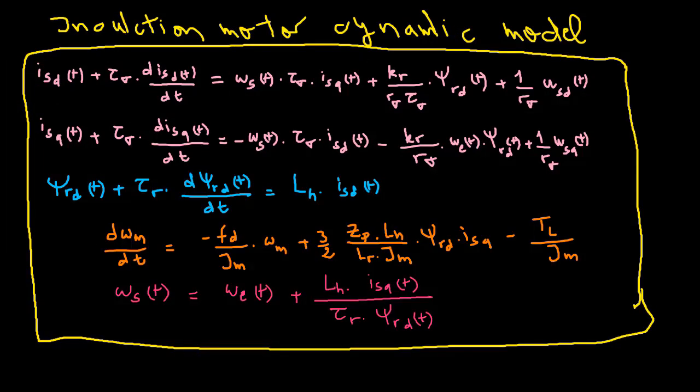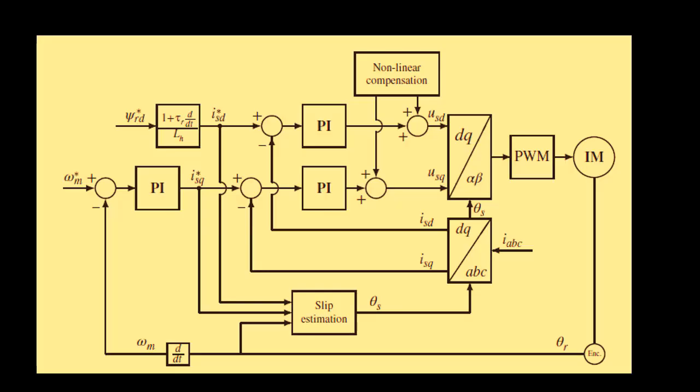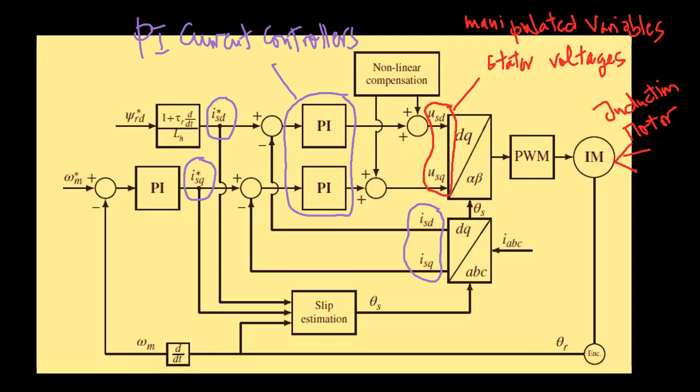It is seen from the dynamic model of the induction motor that the control problem is similar to that of PMSM. However, to a certain degree it is more complex from the control system design point of view. The manipulated variables in the induction motor control problem are the stator voltages usd and usq.